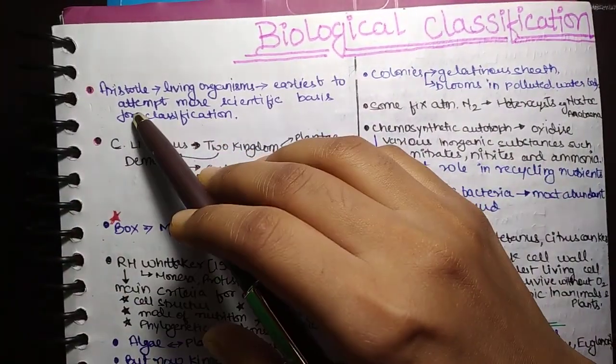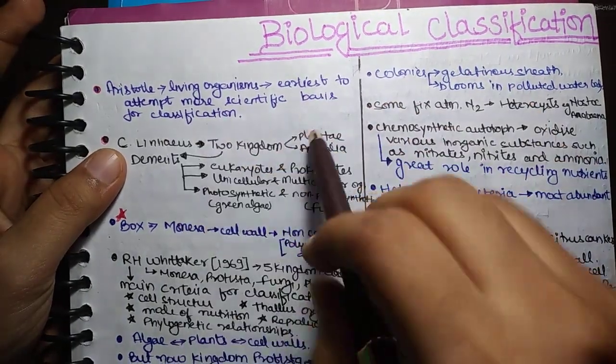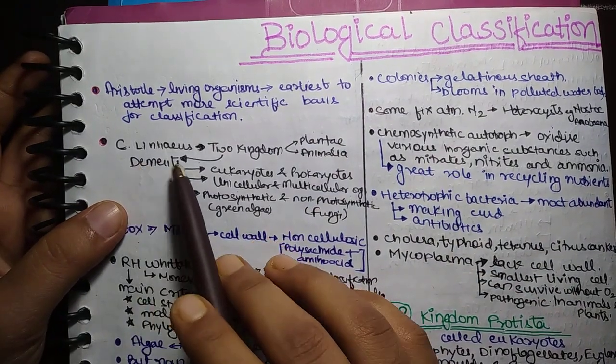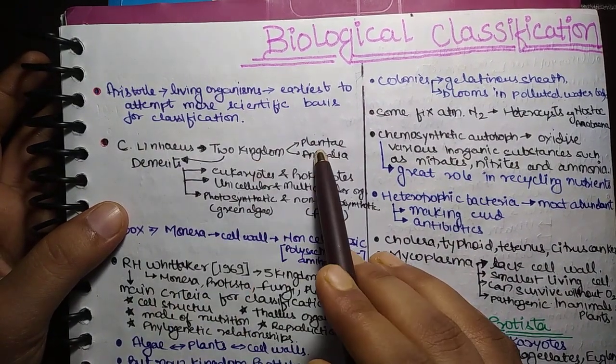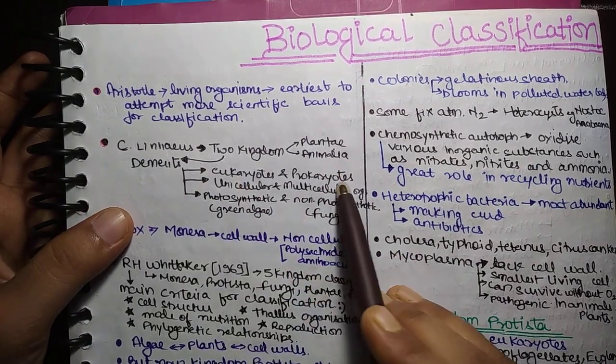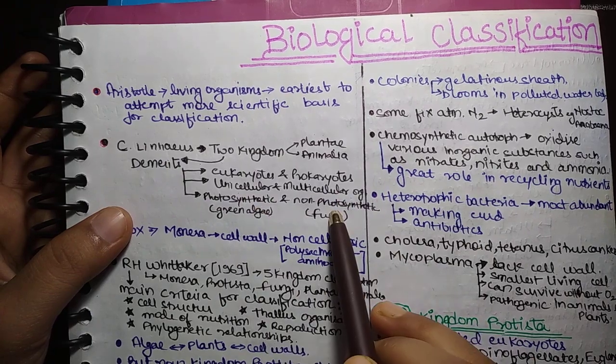The first line is Aristotle's Living Organism's earliest to attempt more scientific basis for classification. The next point is Linnaeus's Two Kingdoms, Plantae and Animalia. What were their merits? Eukaryotes and Prokaryotes, Unicellular and Multicellular Organisms, Photosynthetic and Non-Photosynthetic.